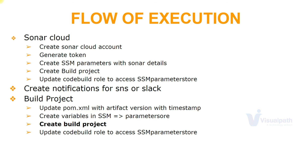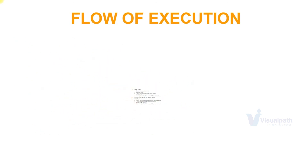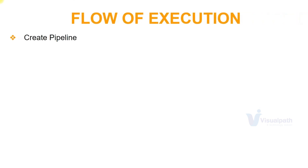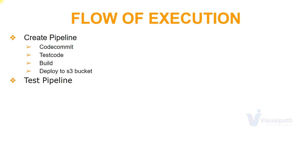The CodeBuild job we create will also need access to the Parameter Store, so we're going to update the CodeBuild role accordingly. Once we have all this ready, we're going to finally connect everything with the pipeline — AWS CodePipeline — connecting CodeCommit, the SonarCloud code analysis job, and the build job that builds the artifact and uploads it to S3. Finally, we'll test our pipeline: we'll make a code change and see how automatically the pipeline triggers and we get a well-tested artifact in the S3 bucket.